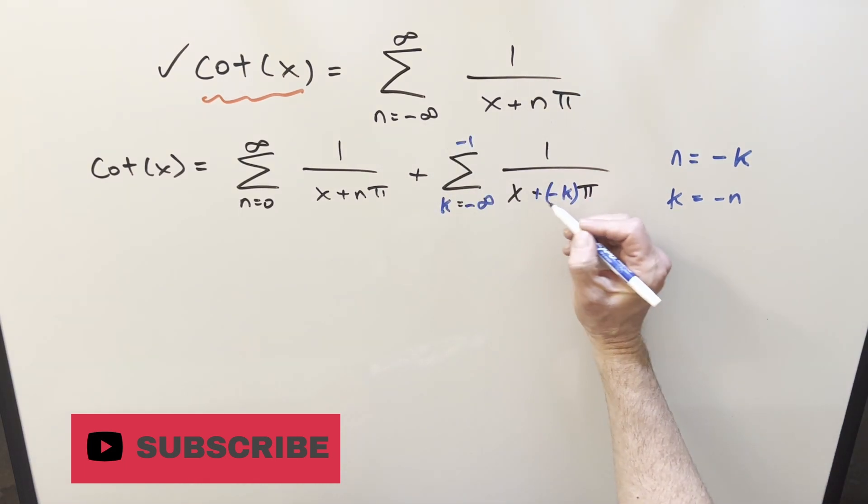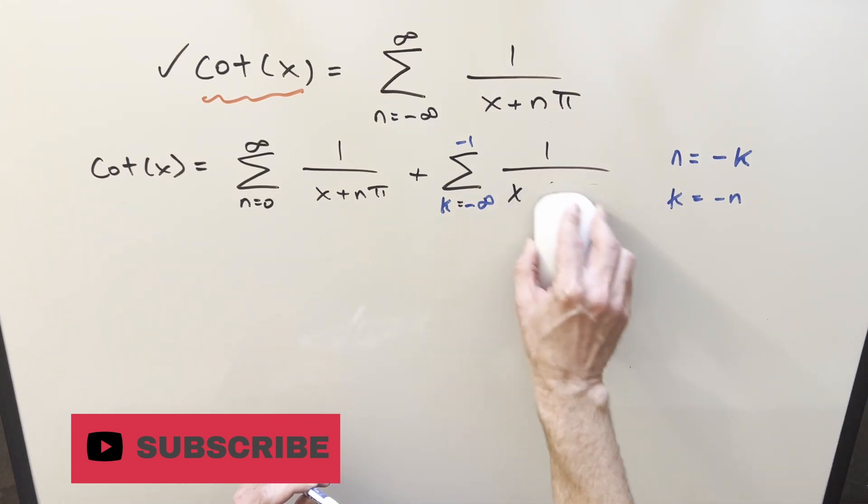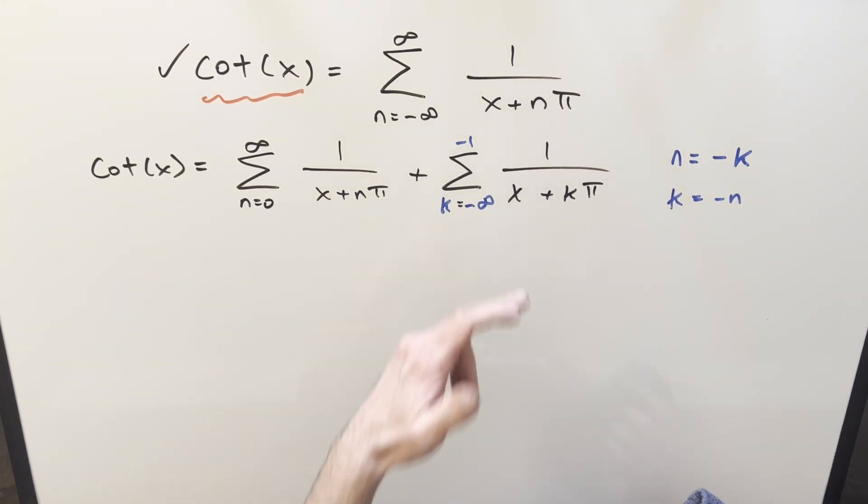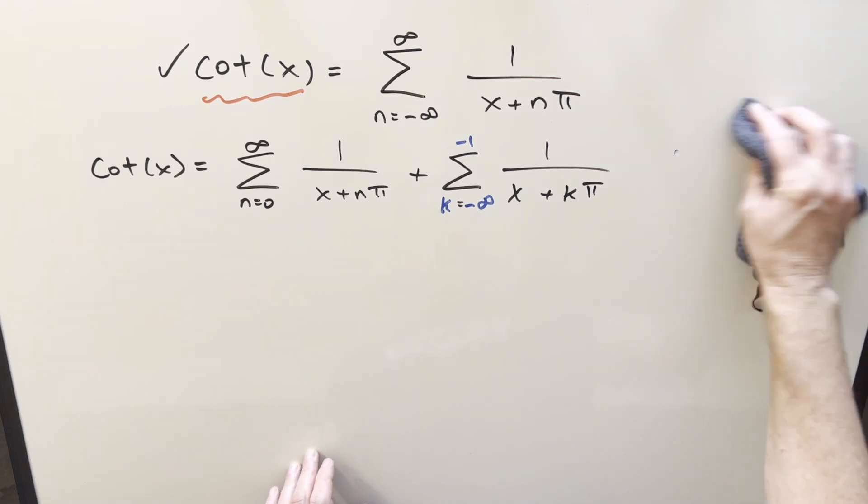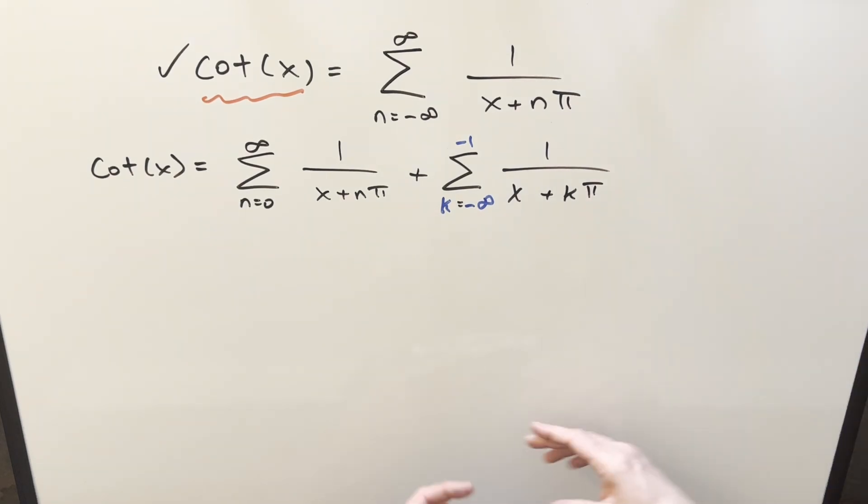And then over here, minus times minus is plus. And so we can rewrite this thing as just plus k pi. And so now that we've got this the way we want, let's get rid of this junk. And then we'll do another variable change, because it's just a dummy variable. I can change this back to whatever I want. So I'm going to change this back to an n.